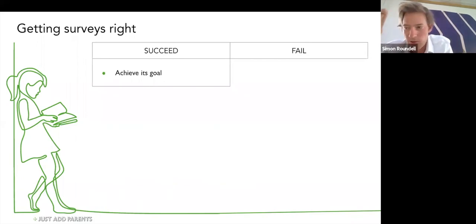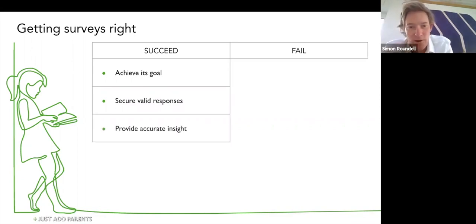To succeed, a survey must achieve its goal, which is the first thing. This is the starting point. If you get this wrong, you're going to fail. The second thing is it needs to secure valid responses to the questions, and validity is important. That comes from having a clear goal.